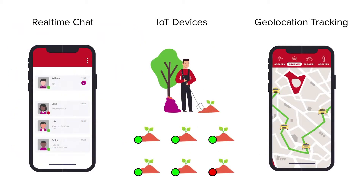In practice, you can use the Presence API to build a chat application with online status indicators, you can use it to monitor IoT devices that are functioning, and in a rideshare app users can see which drivers are active.